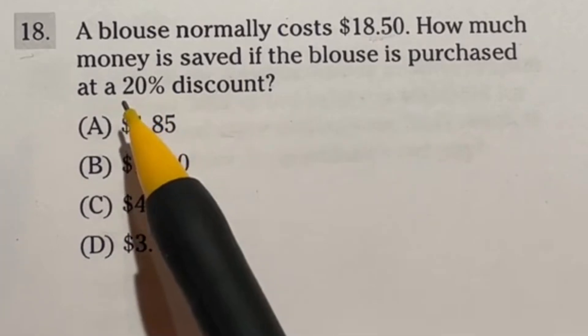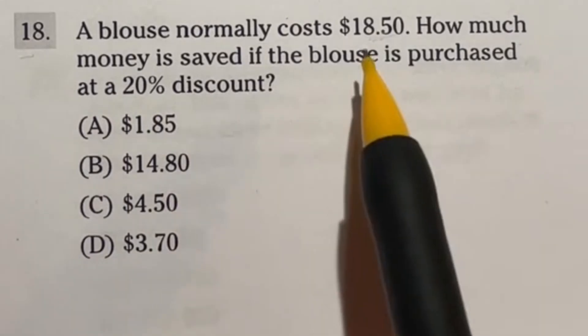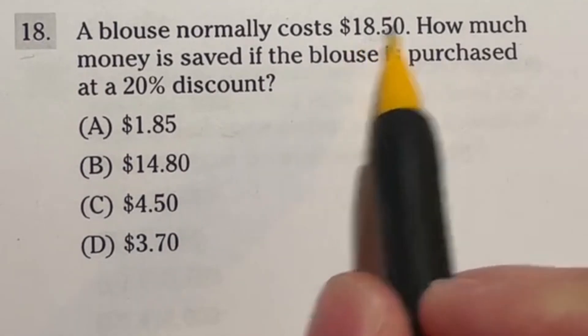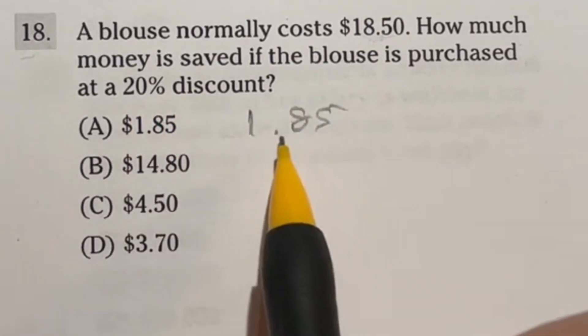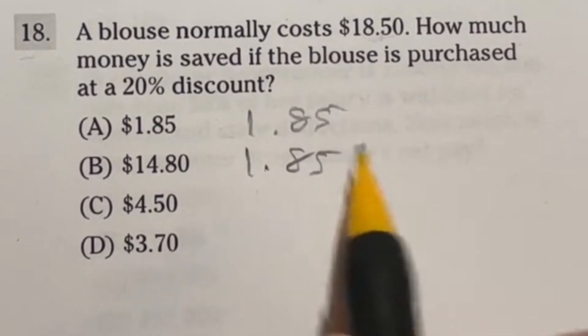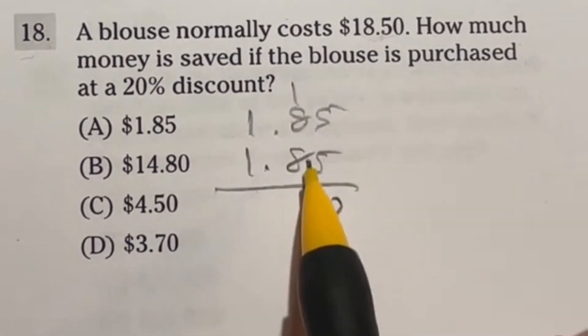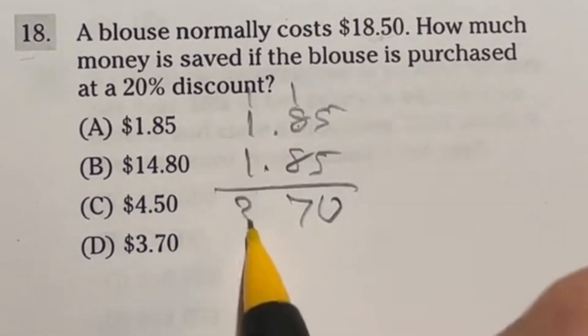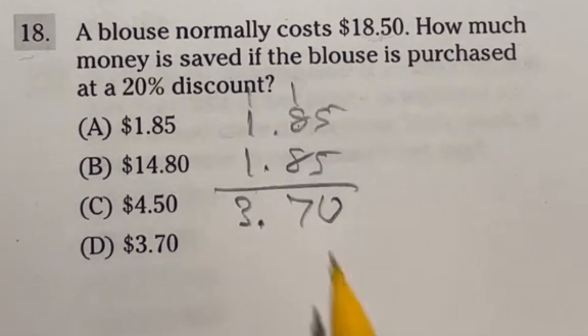For example, 20% is really just 10% twice, and 10% is really easy to find because you just move the decimal place over to the left once. So 10% of this guy right here is $1.85, and we have two of those. $1.85 plus another $1.85 is going to give us that 20% discount. If we add these up we get $3.70, which is option D.